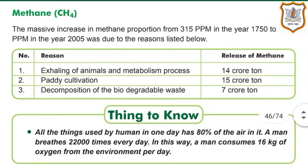Now methane (CH4). The massive increase in methane proportion from 315 ppm in 1750 to 1,764 ppm in 2005 was due to: exhaling of animals and metabolism processes — 14 crore tons of methane; paddy cultivation — 15 crore tons; decomposition of biodegradable waste — 7 crore tons.